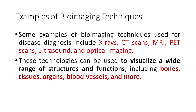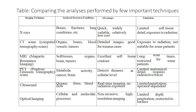This particular imaging will help us understand our internal body structures and functions, and also help identify and diagnose a wide range of diseases and conditions inside our body. Examples of bioimaging techniques used for disease diagnosis include X-rays, CT scans, MRI, PET scans, ultrasounds, and optical imaging. These technologies can be used to visualize structures and functions inside our body including bones, tissues, organs, and blood vessels.